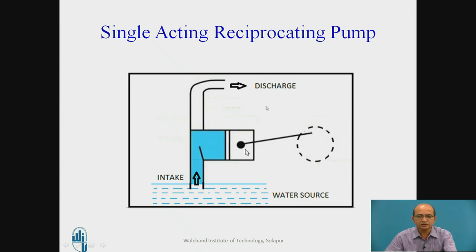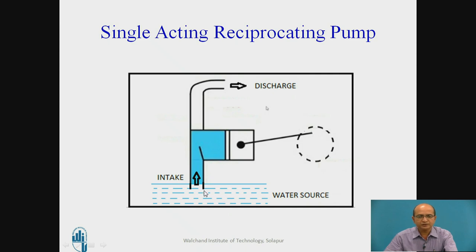Regarding construction, the piston is provided with an O-ring so that there is a closed sealing and water will not rush to the opposite end. The piston rod is also provided with an O-ring for proper sealing. The water sucked inside the cylinder during the suction stroke — from inner dead center to the outer dead center — rushes in because of the pressure difference.